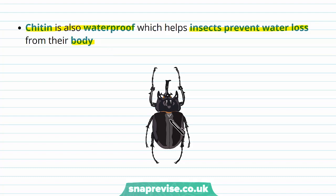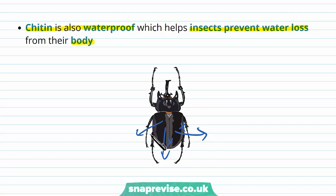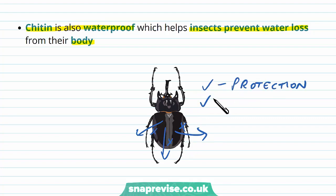Because chitin is waterproof, water which would otherwise leave the body into the environment doesn't pass through this material. So it's good for protection and it's good for maintaining water balance.